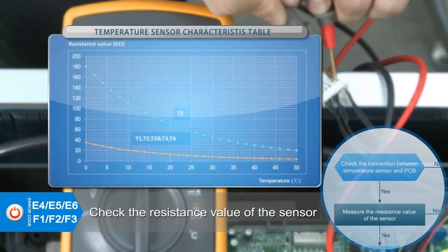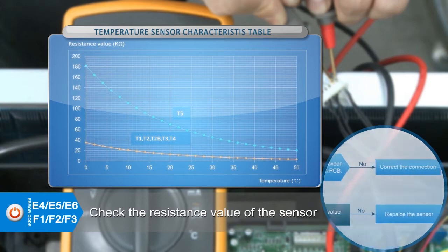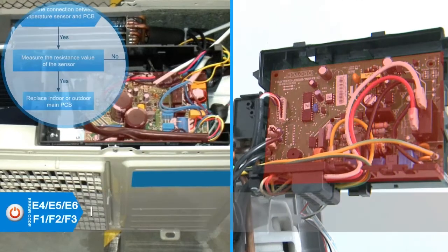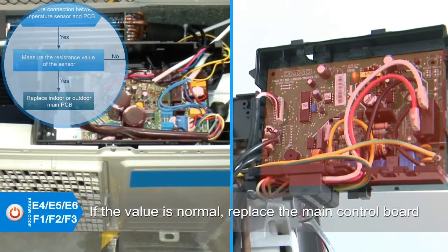The resistance value refers to the characteristic table. If the value is abnormal, replace the sensor. If the resistance value is normal, replace the main control board.